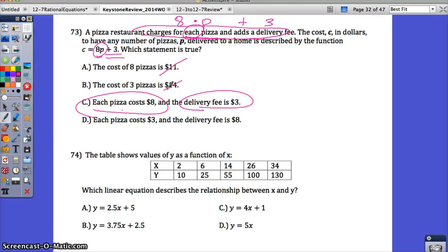Number 74. The table shows values of Y as a function of X. Which linear equation describes the relationship between X and Y? Well, you look at all these equations, all of them are in slope intercept form, Y equals MX plus B. So you're going to have to find the slope from the table to see which one matches.